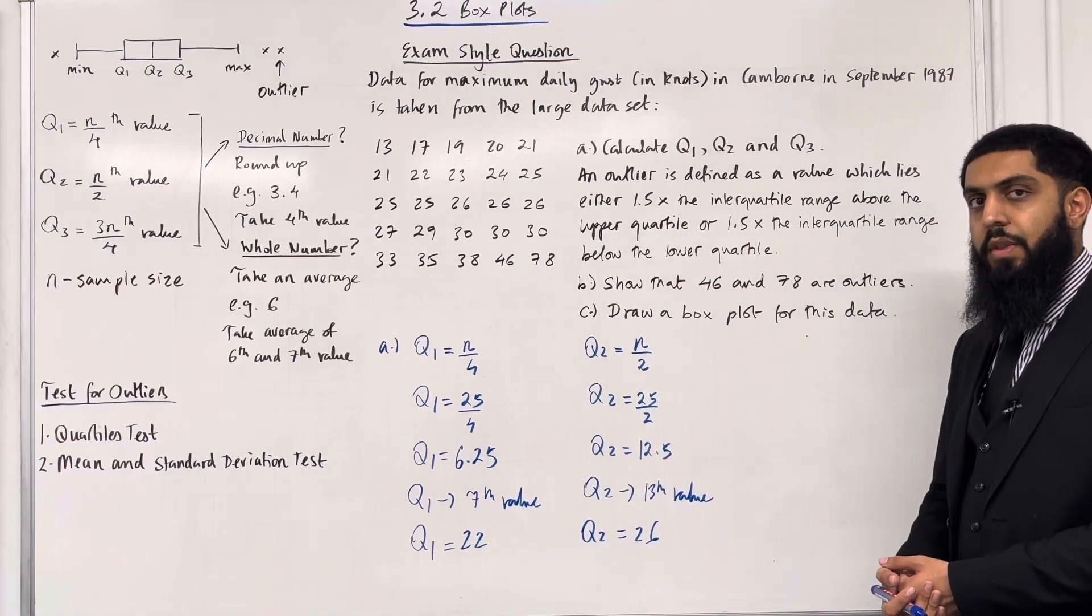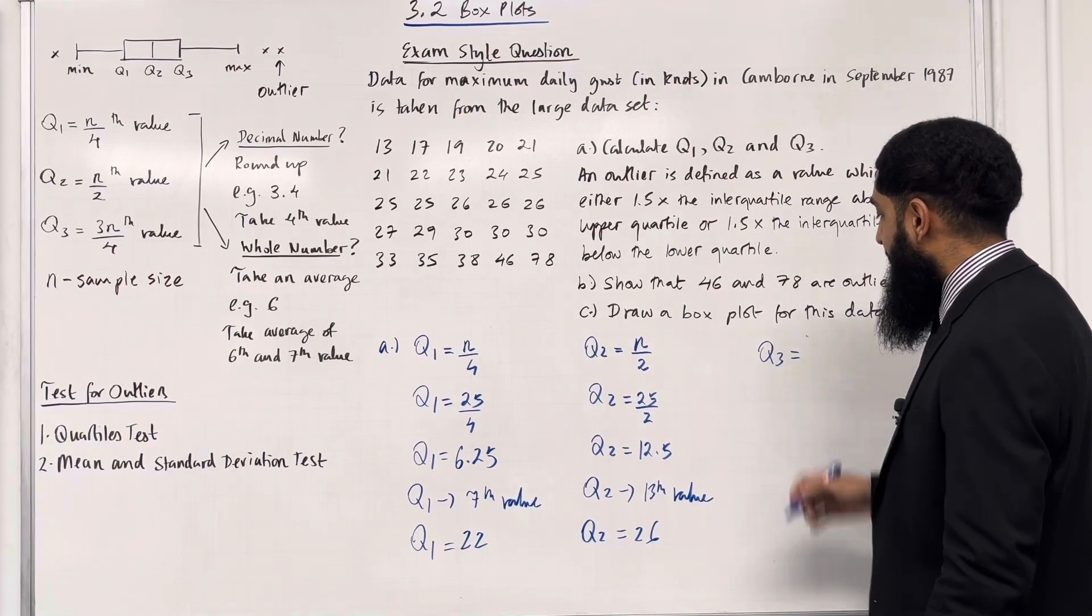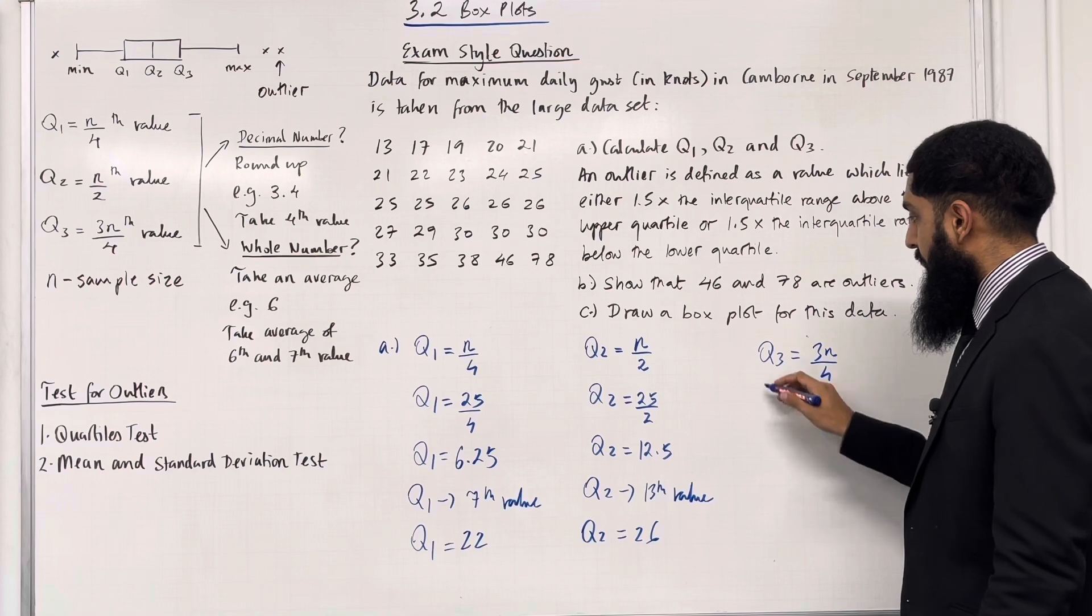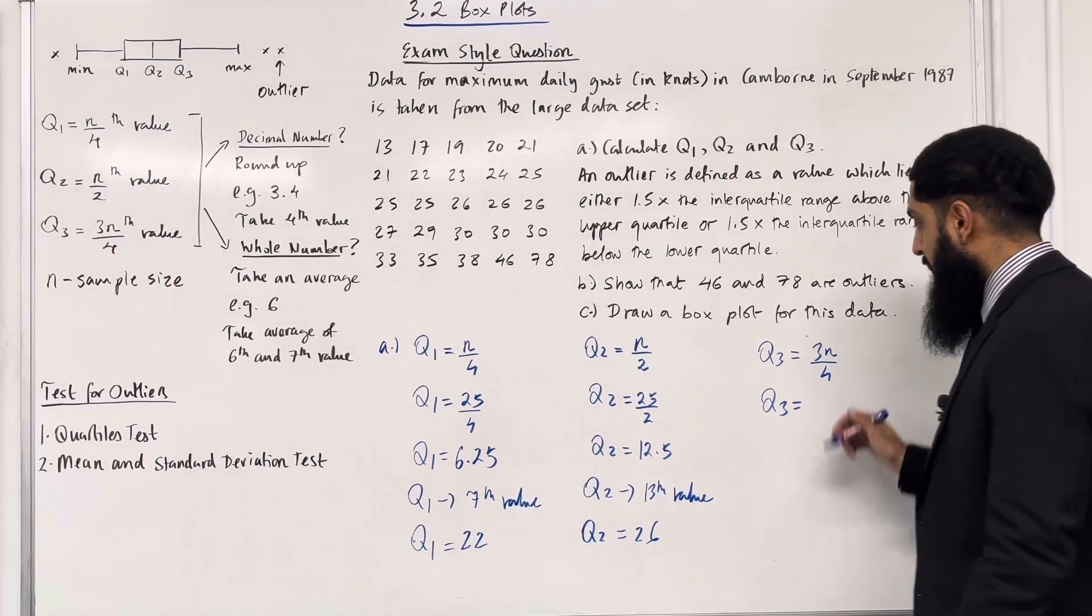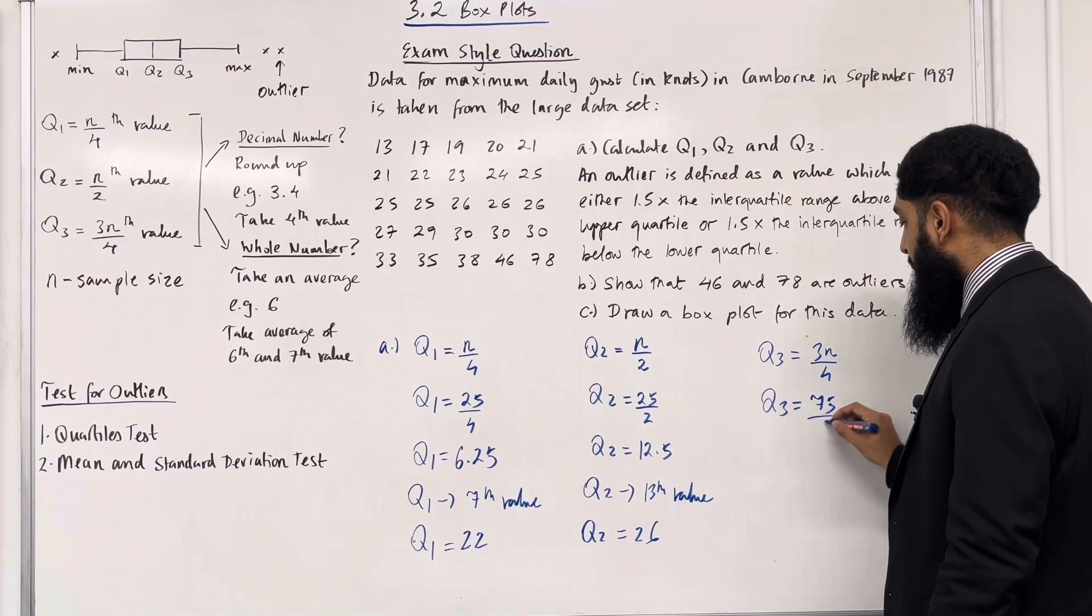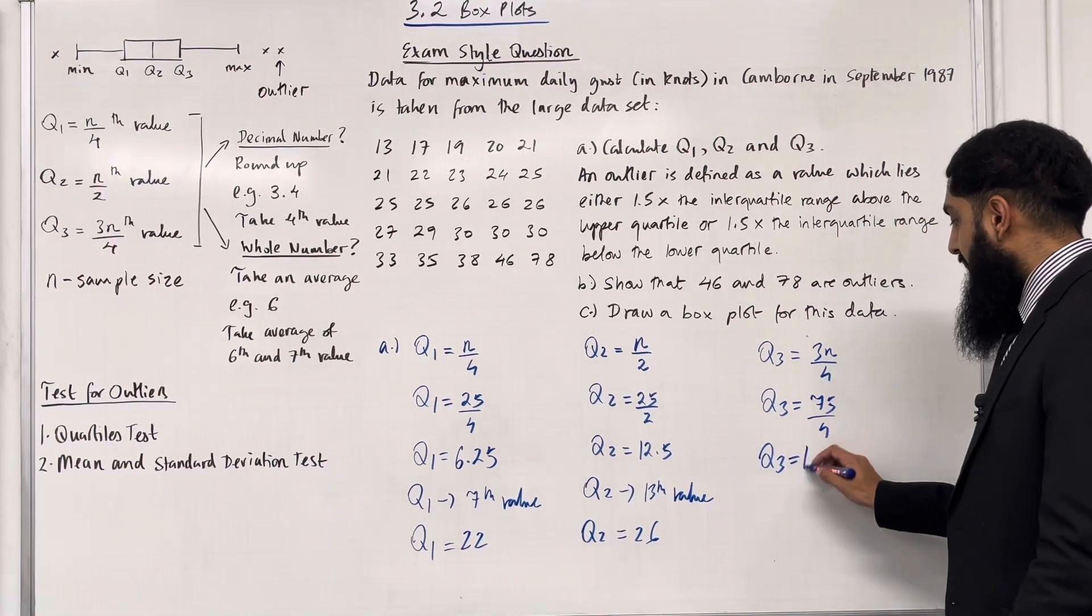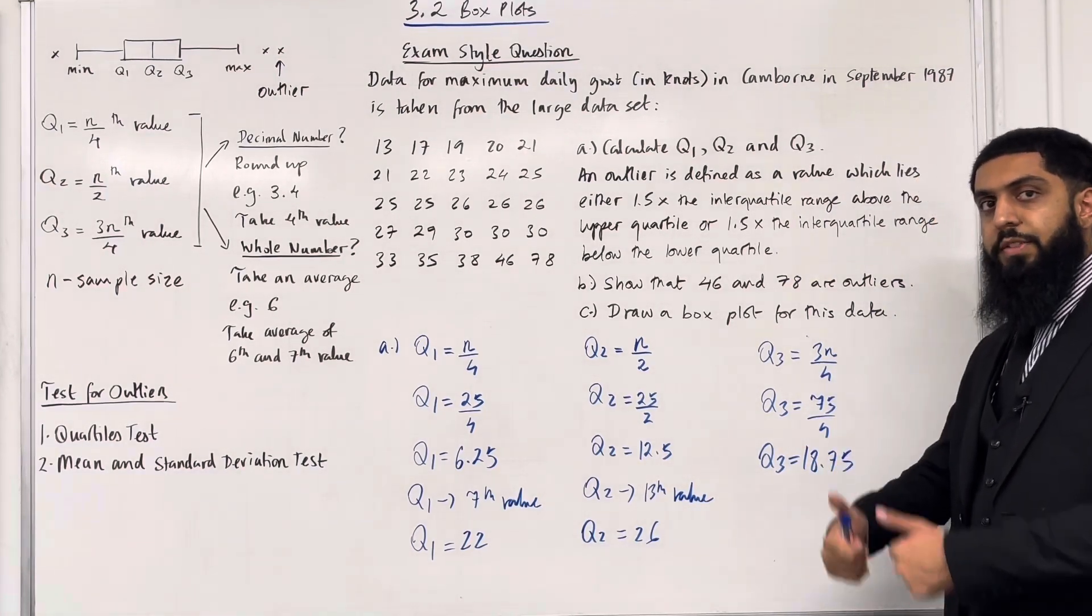Now let's move on to the upper quartile Q3. Q3 is given by 3n over 4. Hence Q3 equals 3 times 25, which is 75 over 4, equaling 18.75. This is a decimal number, so we must round up.